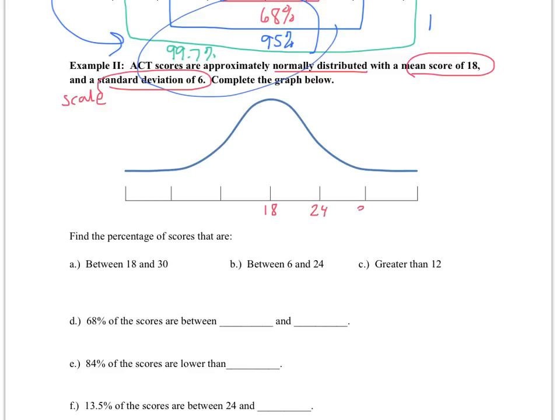So this would be 24, 30, 36, and then down here we have 12, 6, and 0. So the first thing that we want to do is go ahead and fill in those percentages. And we know that there is going to be 34% here and here, 13.5% here and here, 2.35, and 0.15.